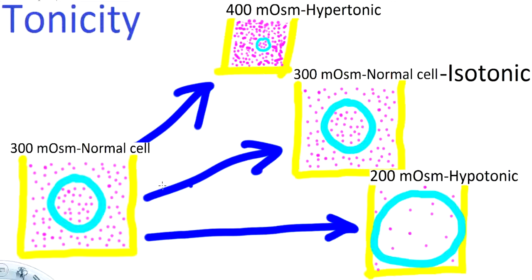Next, we're going to place it into a hypotonic solution. The cell is going to drink water and it is going to swell. Just think of hypo — the cell is going to swell. You can also think about it as the cell following the convention of the spread of the particles: if the particles are very densely packed, the cell is going to shrink. For the hypotonic solution, it's very dilute, so the cell is going to swell.